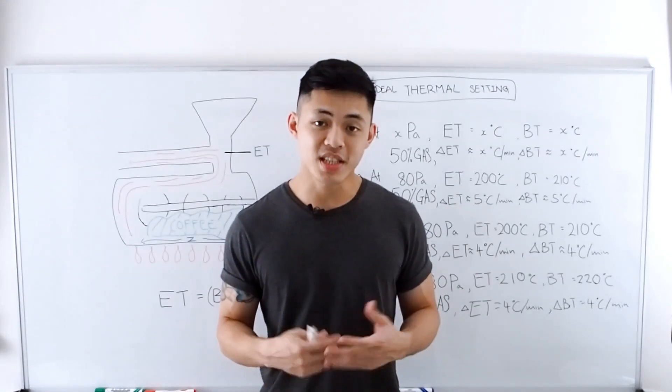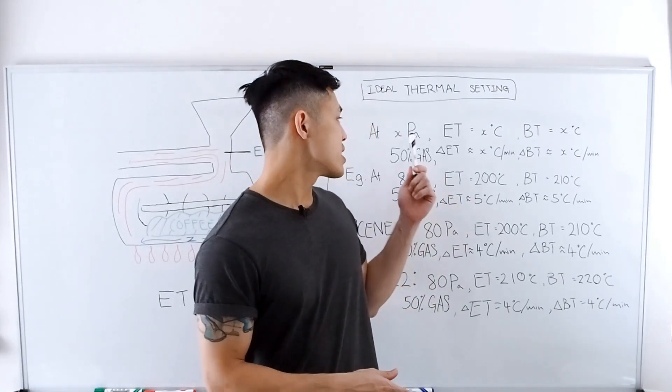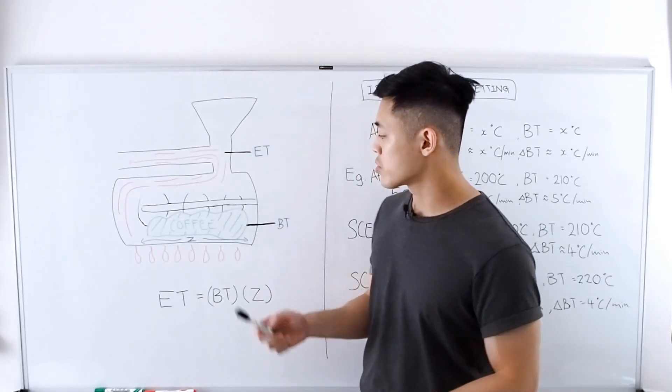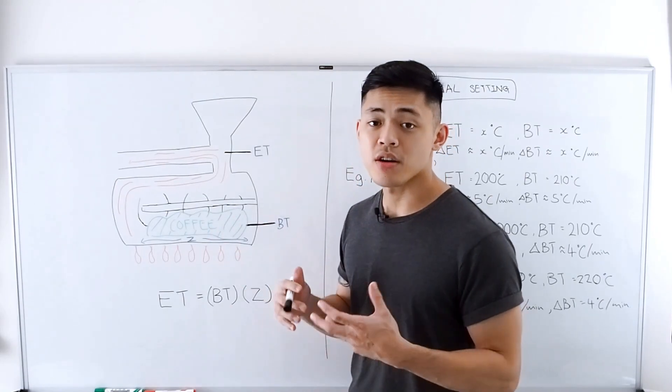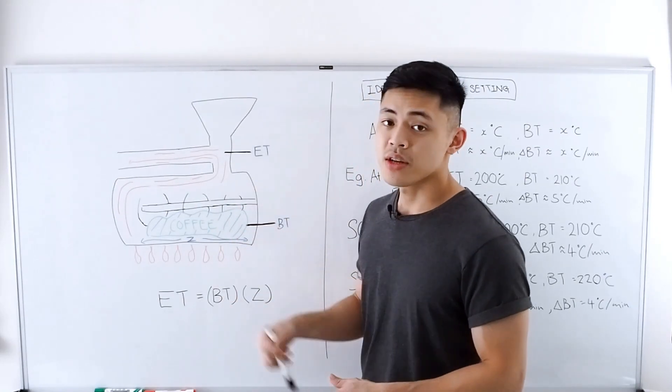Which brings me to our second solution, which is to increase the airflow and increase the negative pressure in the drum roaster, which helps to bring in more cold air into the roaster at a controlled rate and cool down the roaster.